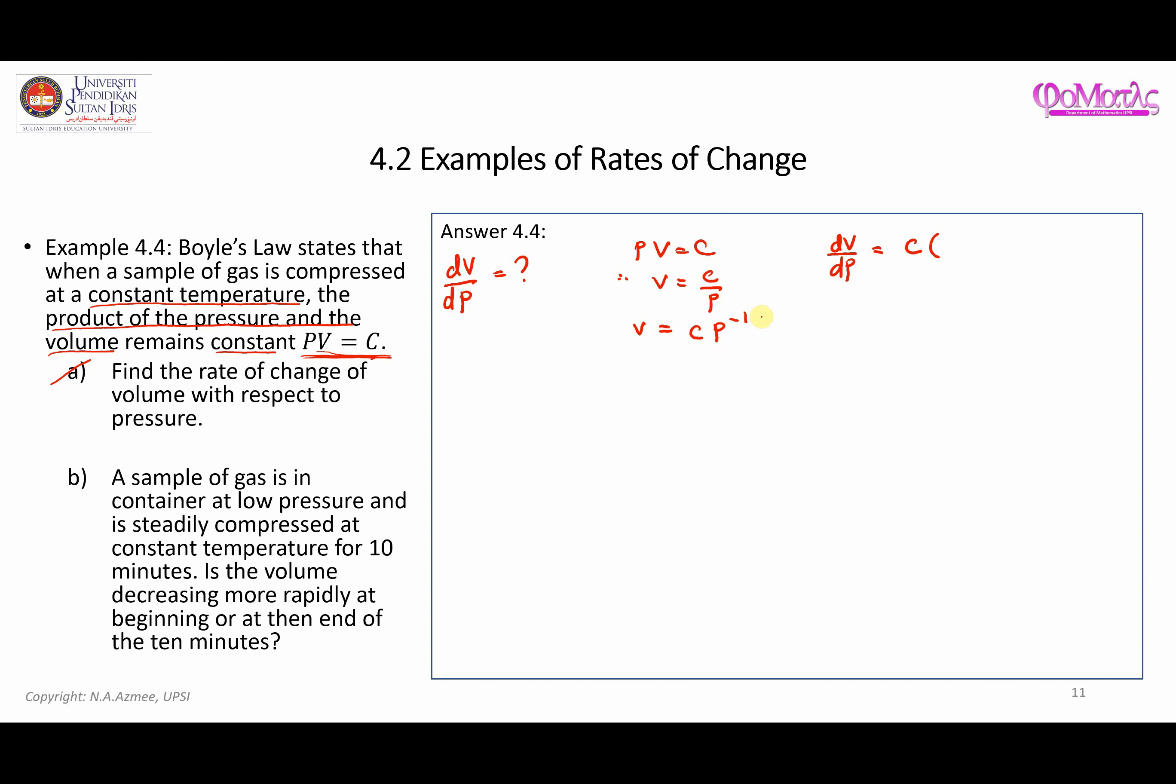So P^(-1) minus 1, so then it will be -C·P^(-2), and that can be simplified as -C/P².